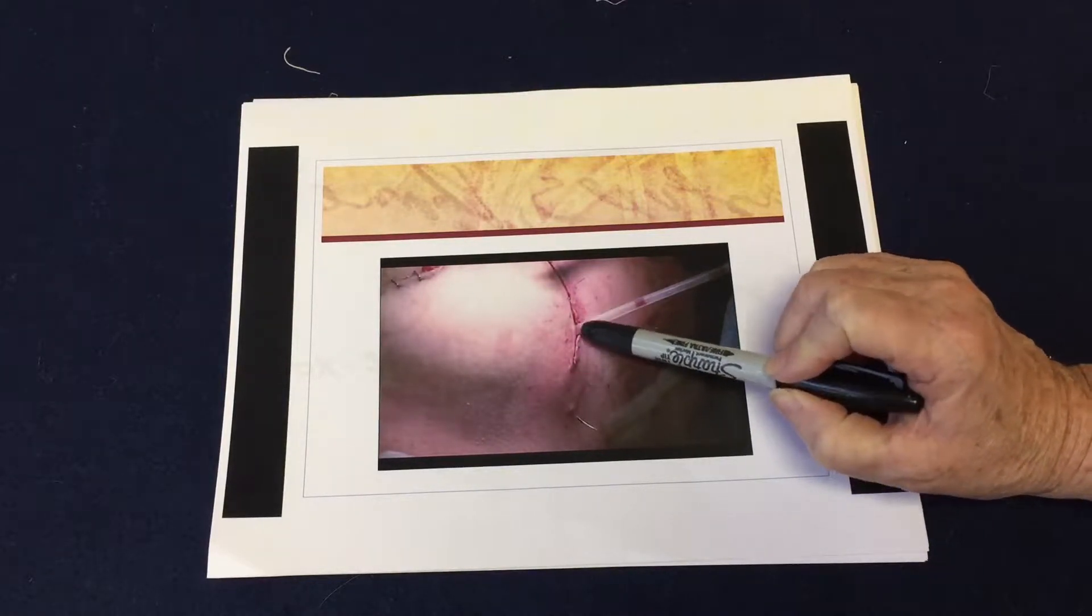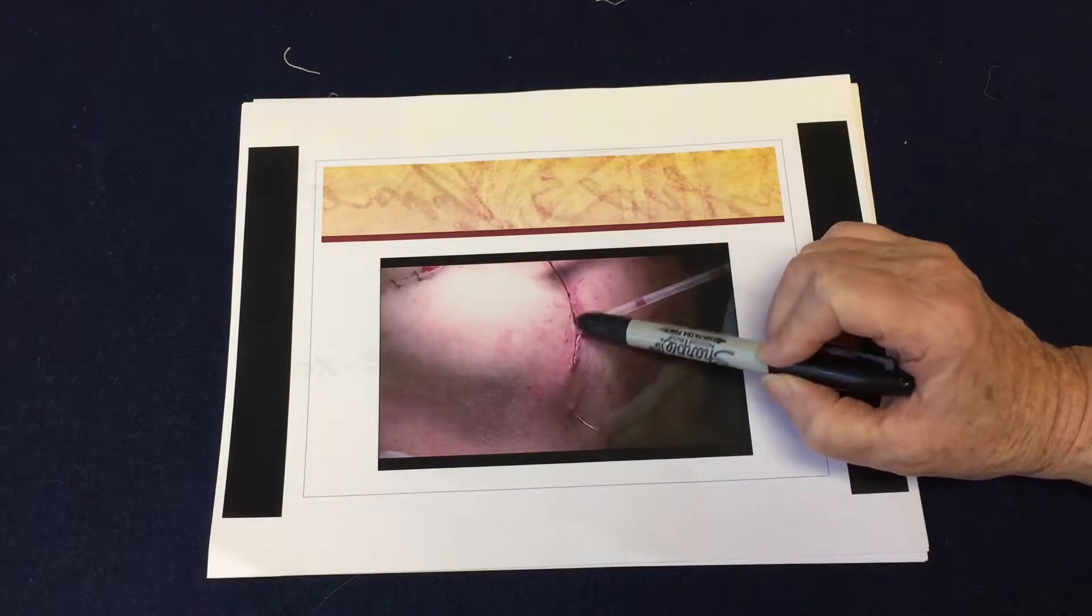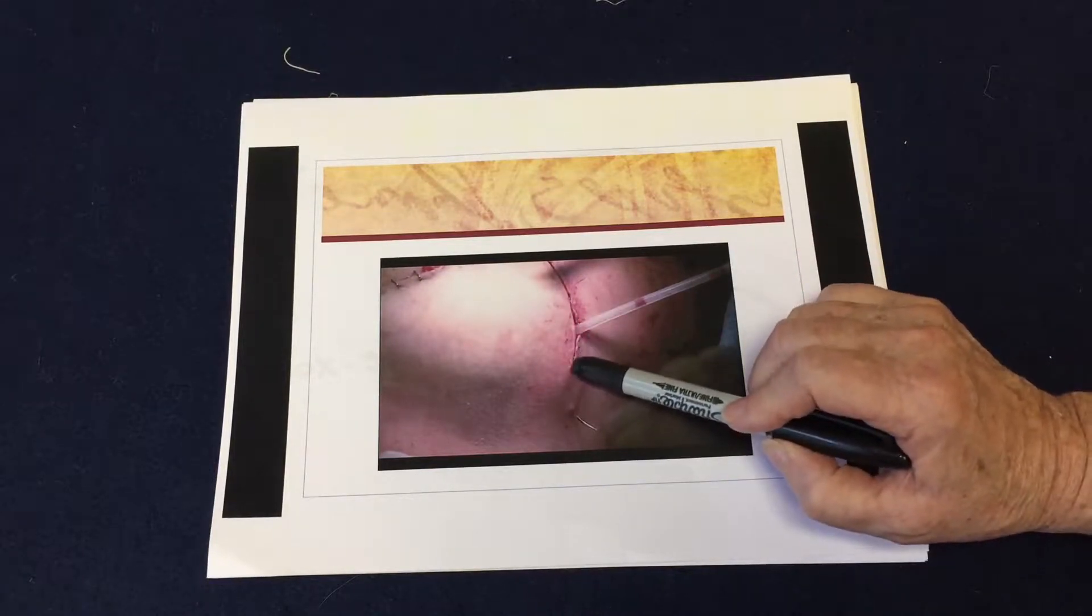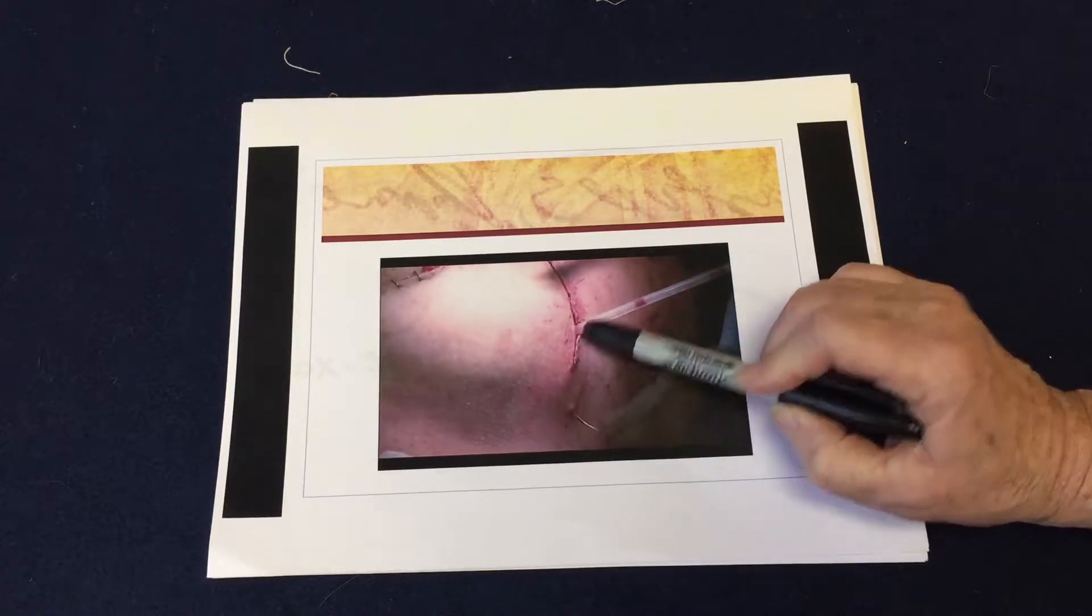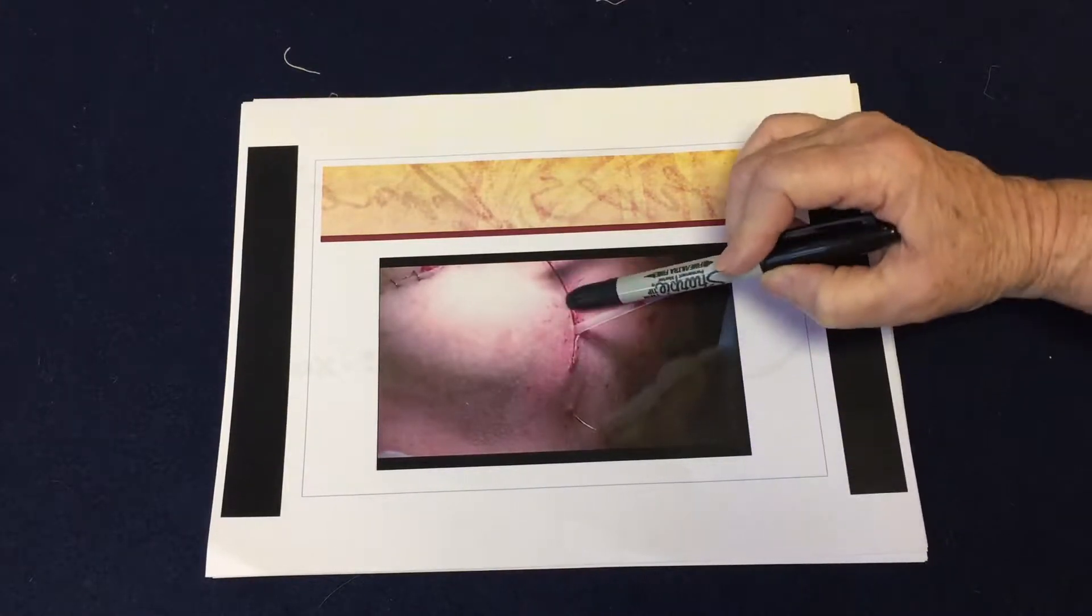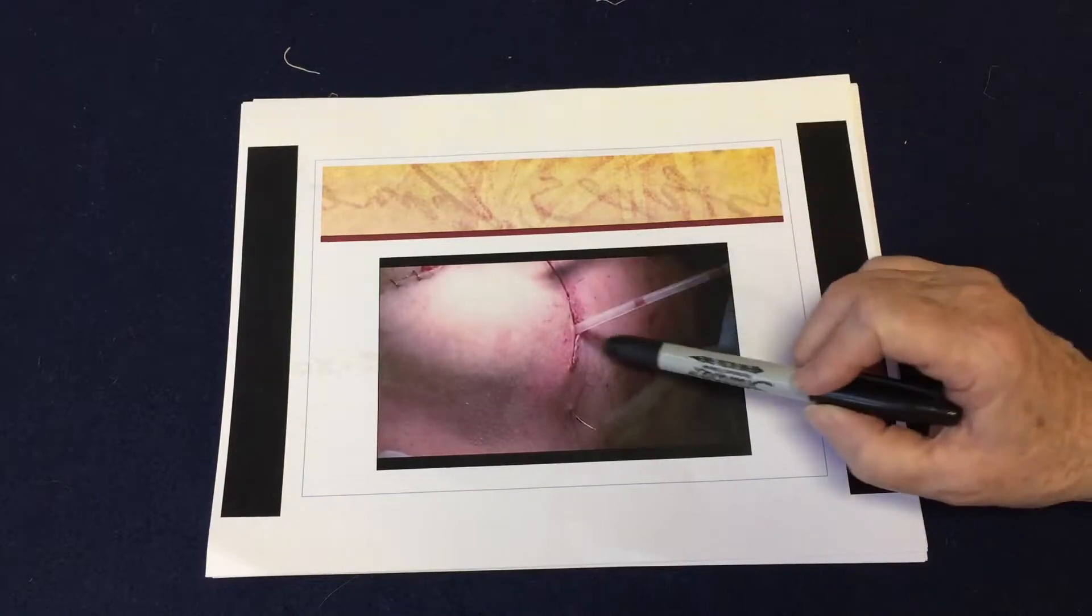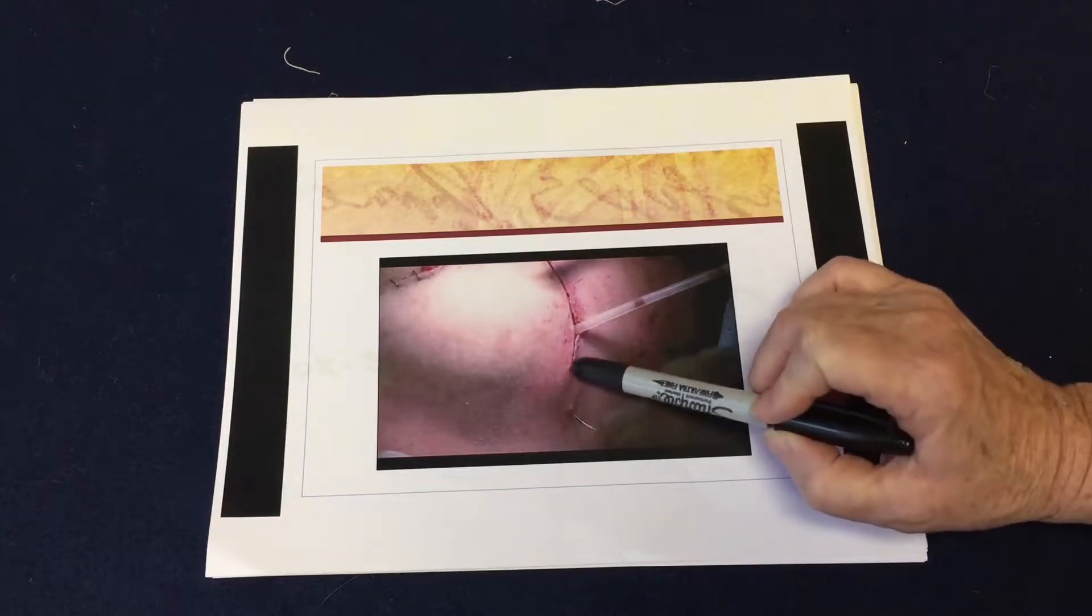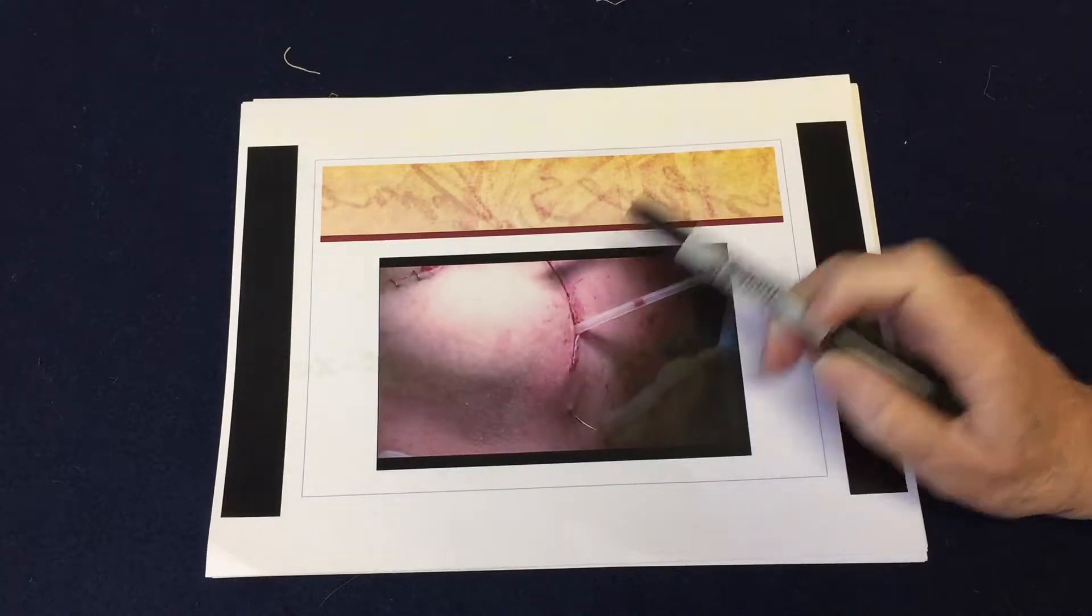This would want to close. I would do a couple interruptors here and then I do a simple interrupted on the outside lateral to this, and here you have running subcuticular. But you can see how that would close much better than if you had it on the corner of the incision.